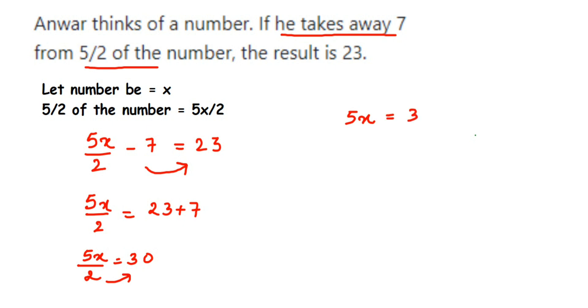So 5x is equal to 60. Now we're going to transpose 5 to the other side. 5 is in multiplication, when transposed to the other side it comes in division. So 60 divided by 5, you will get answer 12. Therefore x is equal to 12, which means the number is equal to 12.